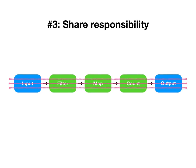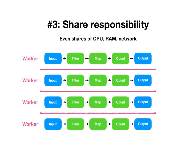Timely dataflow slices the dataflow up so that all workers have a view of the entire dataflow graph, and each worker is responsible for a proportional fraction of each of the operators in the dataflow graph. So in this case the input operator will distribute its data roughly one-fourth to each of the workers, who are then able to locally filter that data, apply the map, all on their own.